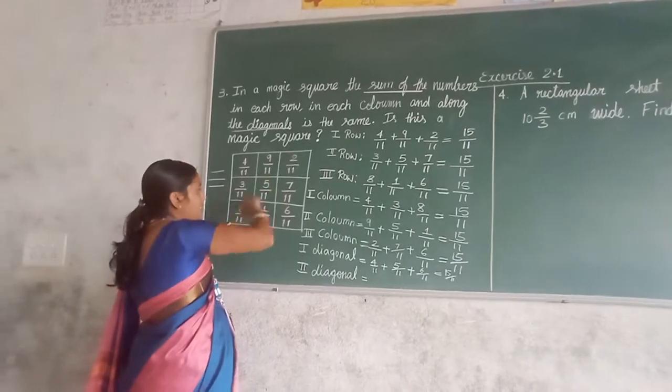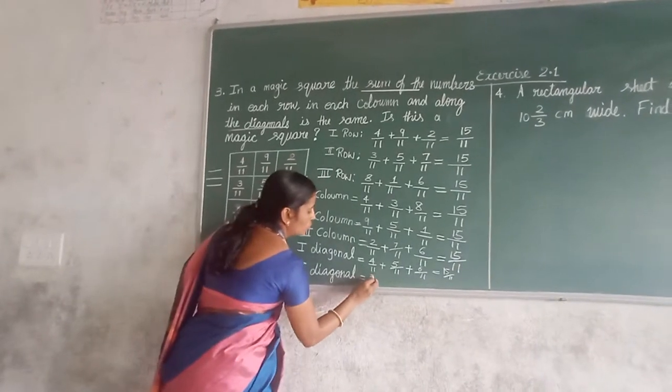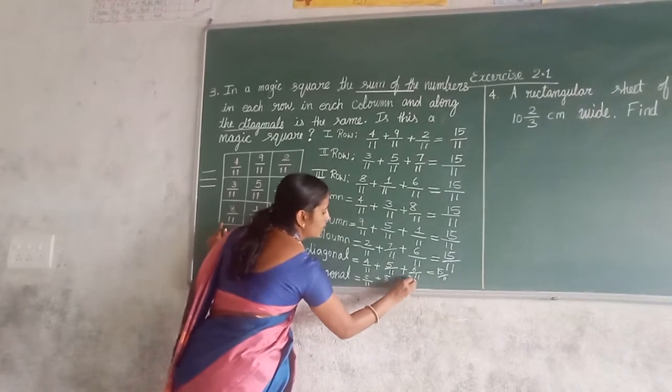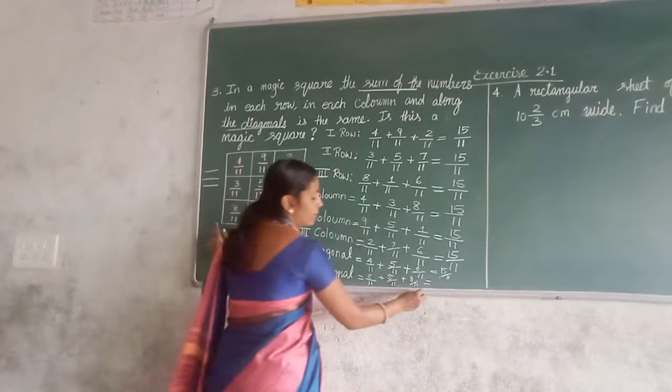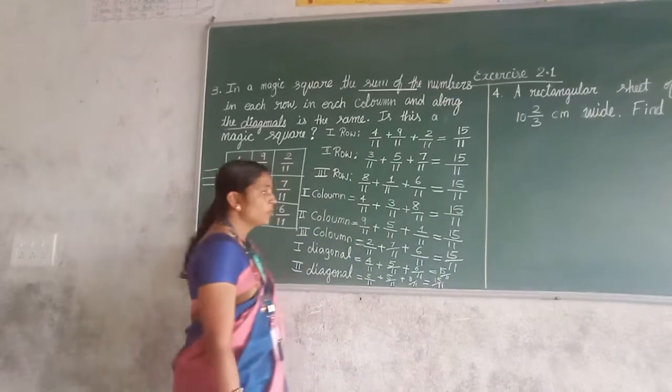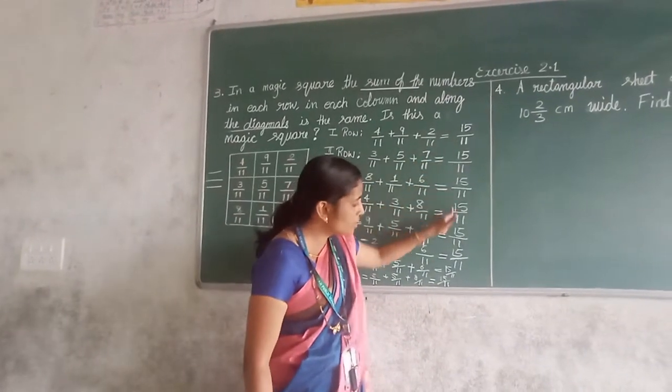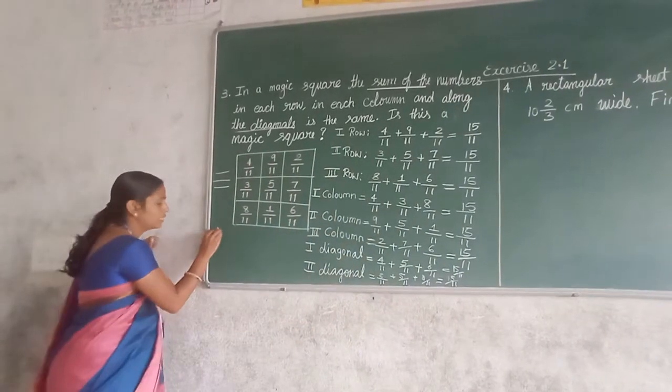Now let us go for this diagonal. 2, 5, 8. 2 upon 11 plus 5 upon 11 plus 8 upon 11. So 8 plus 2, 10. The left of that is 5. So answer is 15 upon 11. Now you have to check whether all the sum is same. Yes.